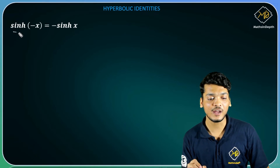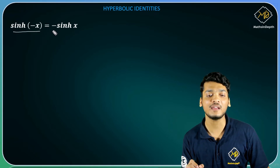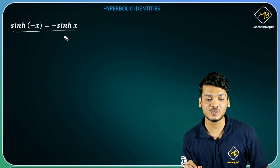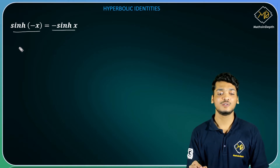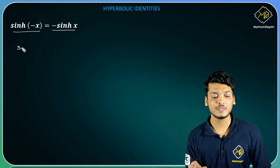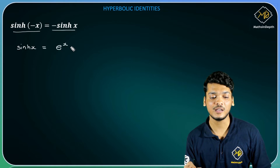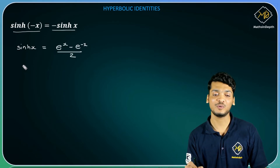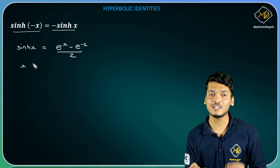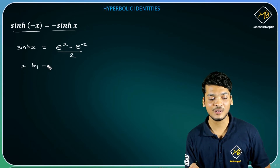In the first identity I have to show that sinh(-x) equals to -sinh(x). So friends, yahan pe main sabse pahle sin hyperbolic x ki definition ko consider karunga: e raise to x minus e raise to minus x divided by 2. Now let's replace x by minus x.